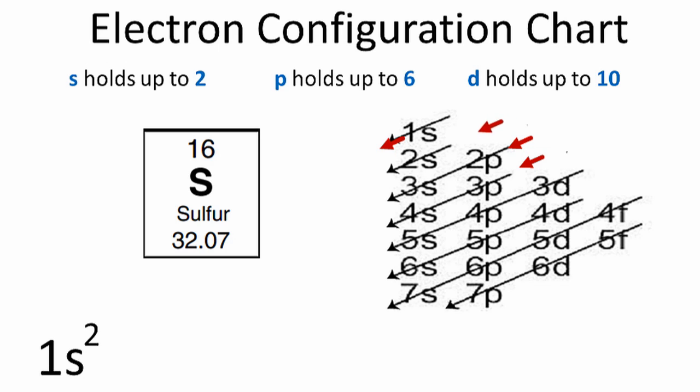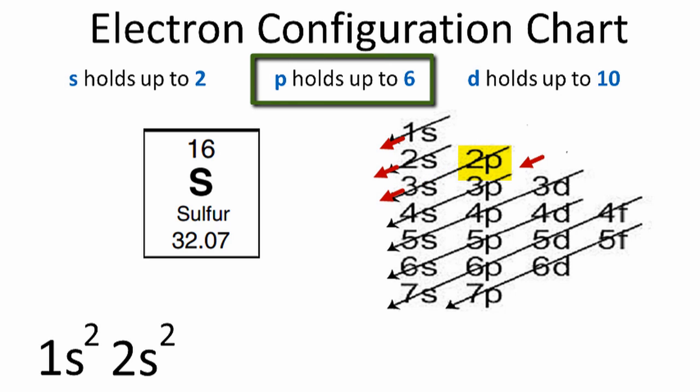We'll go down the next row. That gives us the 2s orbital. We'll put two electrons there. And then in the third row, we start out with the 2p. P orbitals can hold up to six electrons. In this case, let's put all six in that p orbital, and we've used 10 electrons so far. Remember, sulfur has 16.